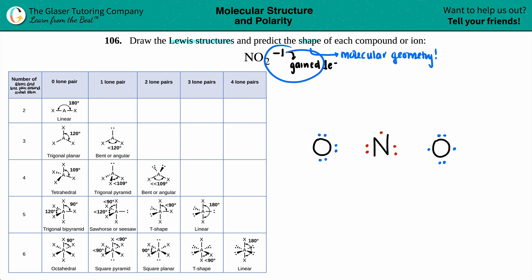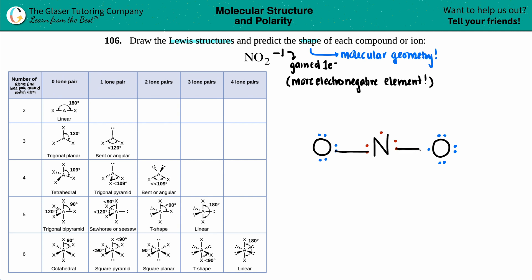Now this negative one means that you gained one electron. Generally, who is going to gain the one electron? Always the more electronegative element. The more electronegative element will always gain that extra electron. So you have a choice between which two oxygens — doesn't matter. Maybe I'll just put the one here.